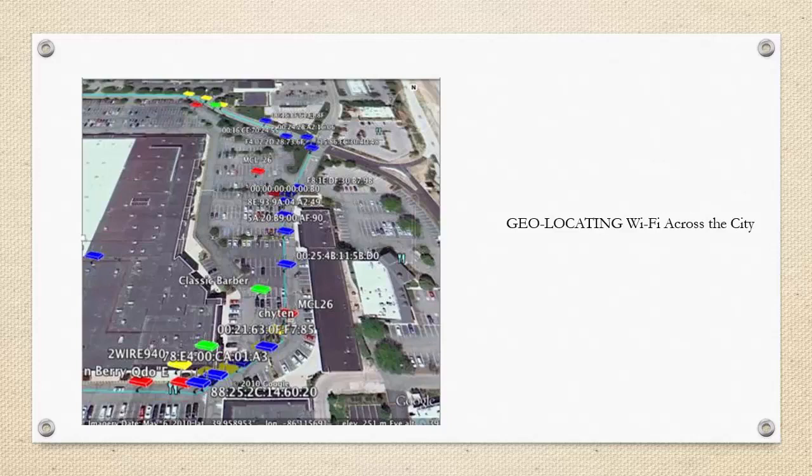One of the places where Kismet is generally used is when a person wants to have a detailed analysis of the available wireless devices in his street or even in his city. In order to do that, he can use various techniques such as war walking, war driving, and even war flying. Let's look at each of them.